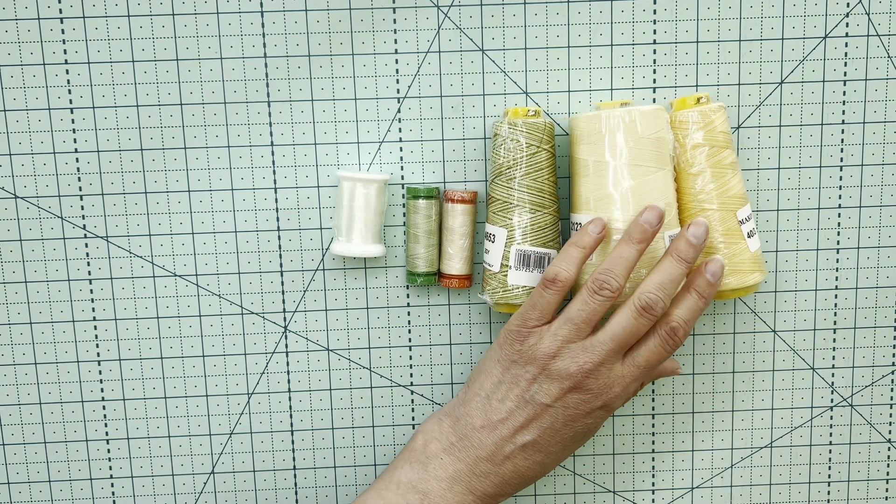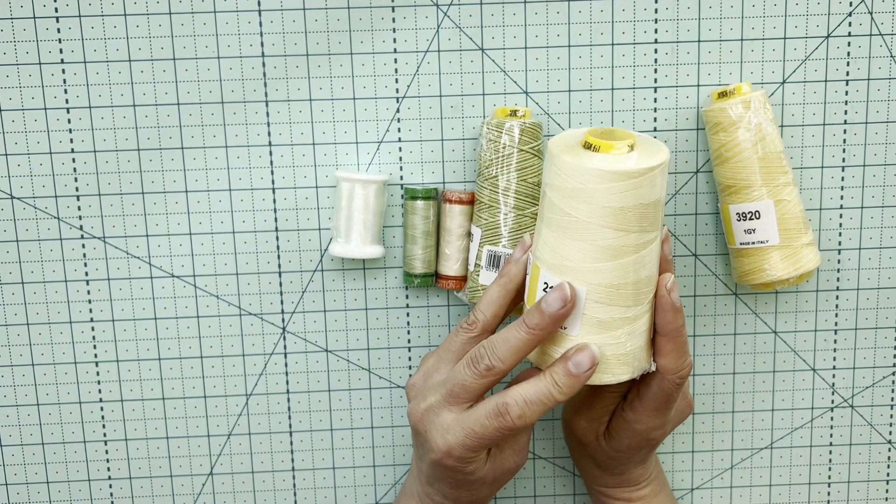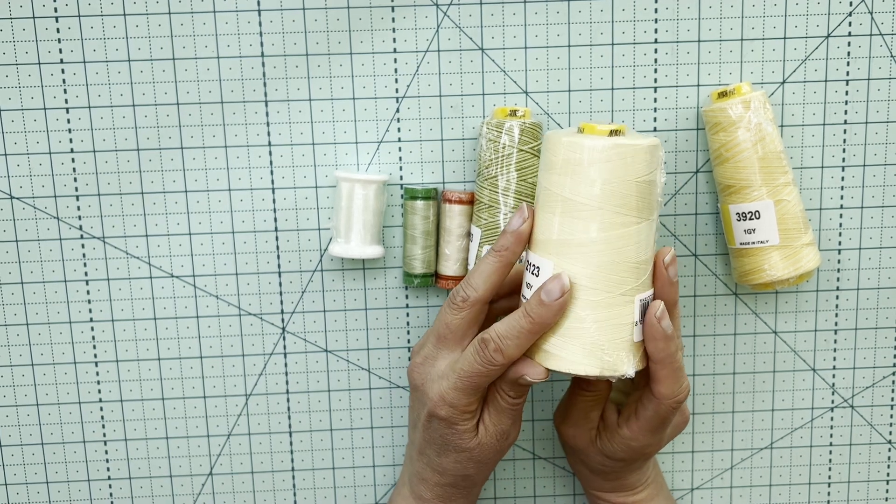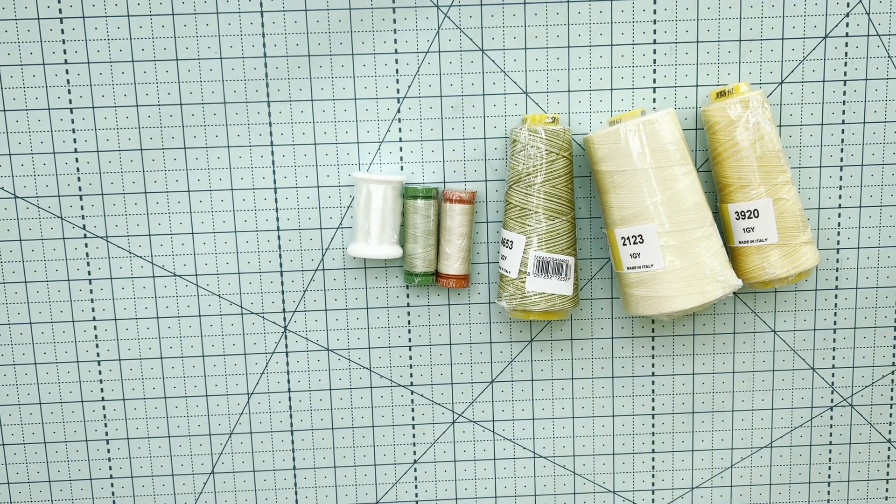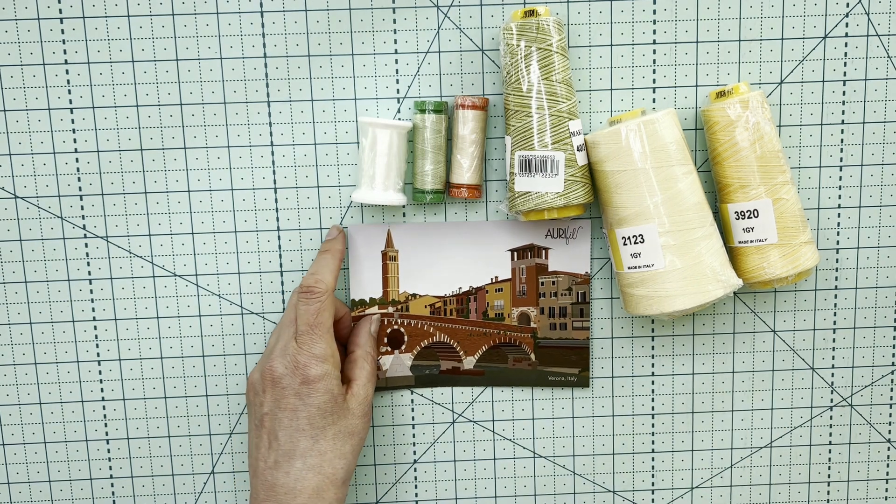Wow, the 40 weight, the 43, the long arm cones look fantastic. Okay, itching to get to this. So this is month five.